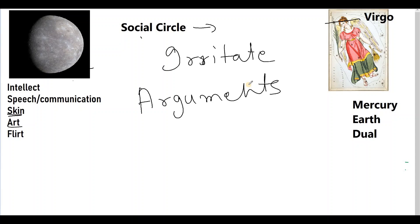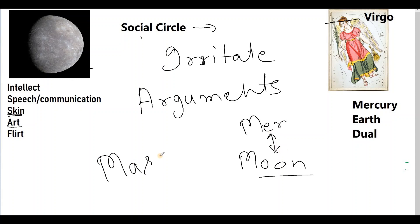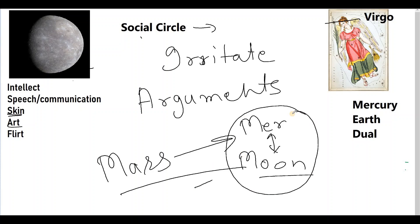Mercury in Virgo persons need to control the urge to get into arguments and analysis paralysis, understanding that not everyone has the same attention to detail. This is an important social trait to correct, especially if Mercury is associated with Moon, as these behaviors can affect their emotions and others may feel they are argumentative. This tendency develops more when Mercury is also associated with Moon and Mars. However, Mars aspecting this strong Mercury also gives a very sharp intellect — yet that sharp intellect should not be used for argument's sake.